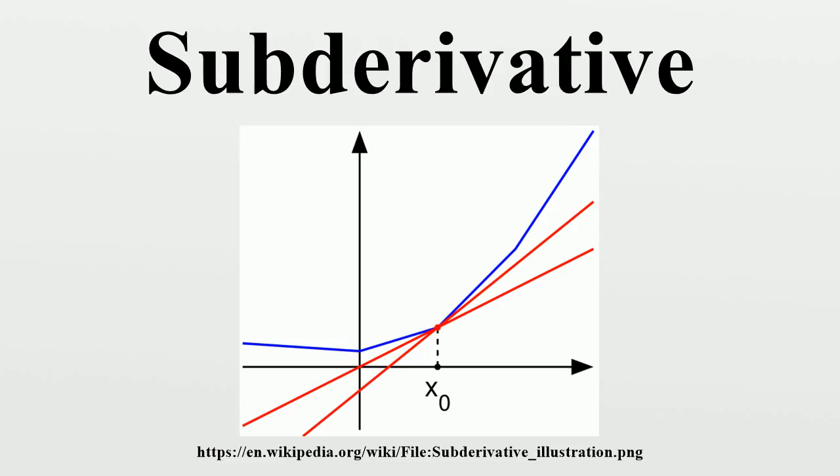The set of all sub-gradients at x₀ is called the sub-differential at x₀ and is denoted ∂F. The sub-differential is always a non-empty convex compact set. These concepts generalize further to convex functions F:U→R on a convex set in a locally convex space V.